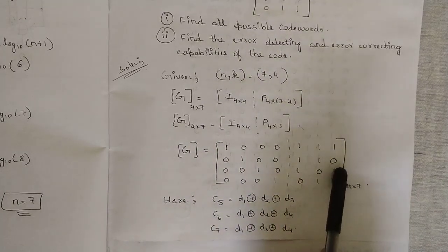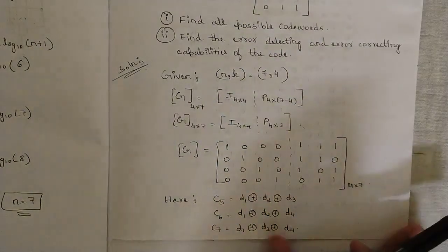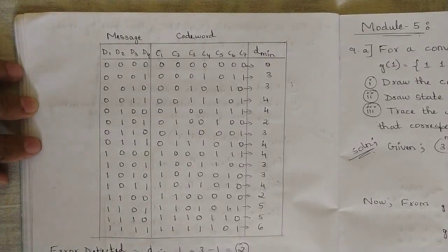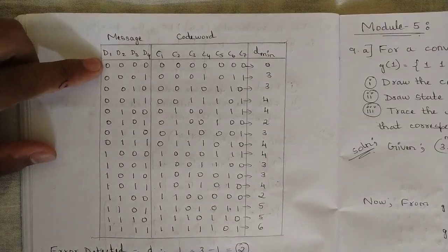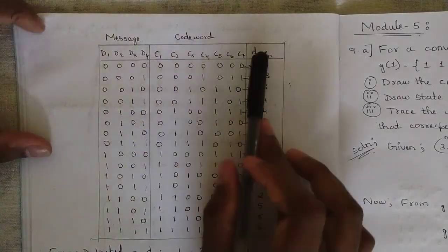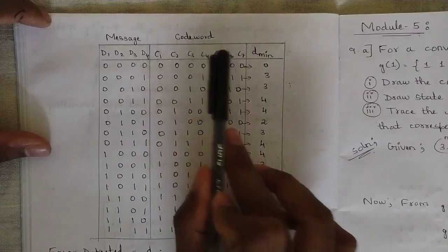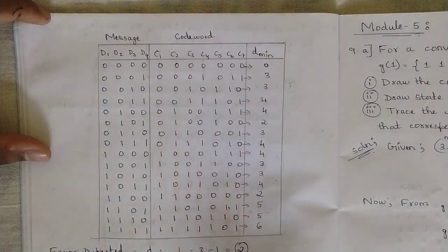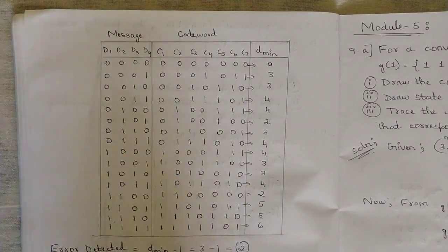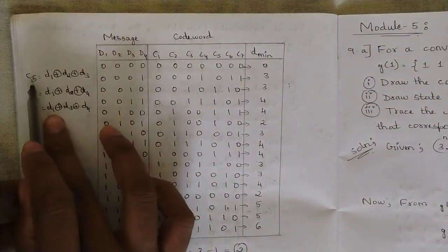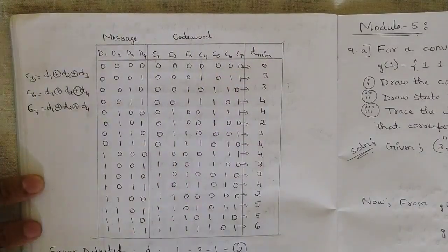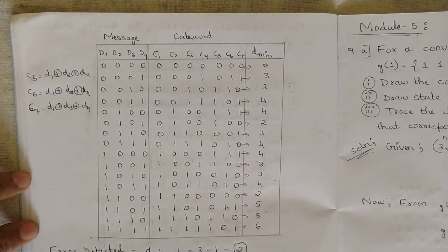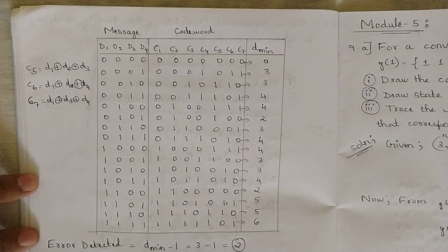Since there are 4 message bits, there are 16 possible combinations from 0000 to 1111. For each message word d1 d2 d3 d4, the code word c1 c2 c3 c4 c5 c6 c7 is formed where c1–c4 remain the same as the message bits, and c5, c6, c7 are computed using modulo-2 addition based on the equations derived from the generator matrix.